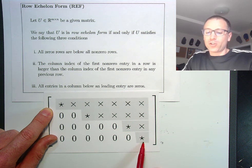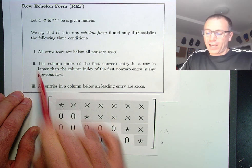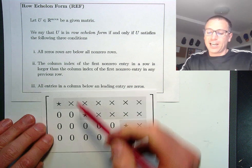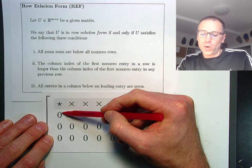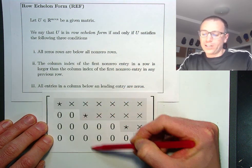Same thing over here. Leading entry, leading entry. This one, we have no zero rows. This one, yes, it's satisfied. Under each leading entry, go ahead and look, all zeros.